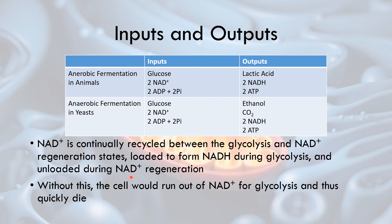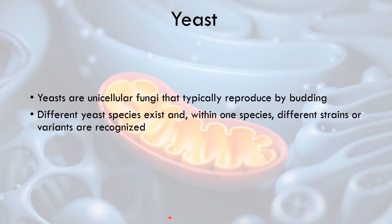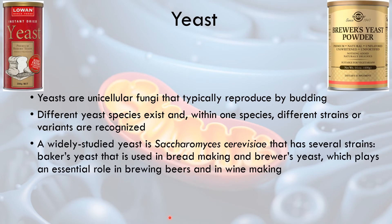If we don't convert that NADH back to NAD⁺, the cell will very quickly die. Yeast — just a reminder — are unicellular fungi that typically reproduce by budding. There are various different yeast species, and within one species, different strains or variants are recognised. A widely studied yeast is Saccharomyces cerevisiae, and it has several strains, including baker's yeast and brewer's yeast.